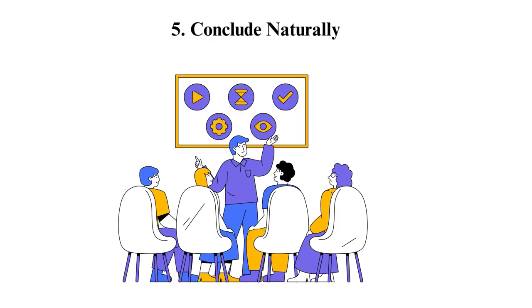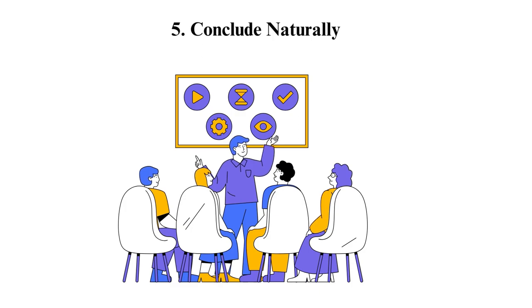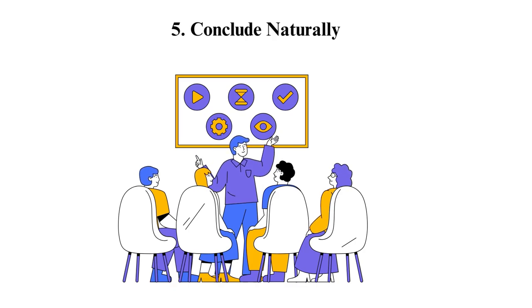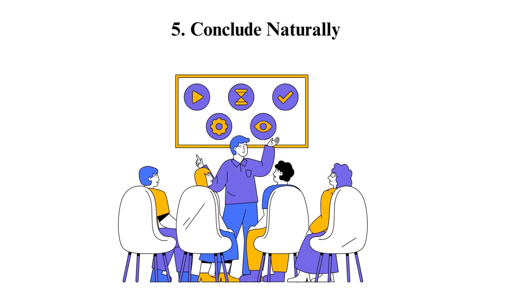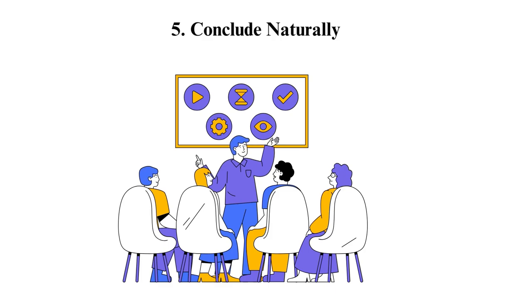Step five: conclude naturally. Provide a summary of the significant points in the speech. Illustrate how the subject will impact your audience in the present or future. Consider also a call to action to the listeners on how they can follow the example of the person or organization mentioned in the speech. If you use the steps mentioned above, your speech will be exemplary.